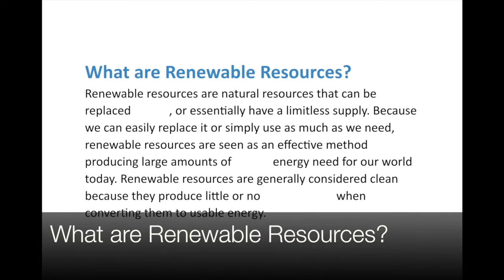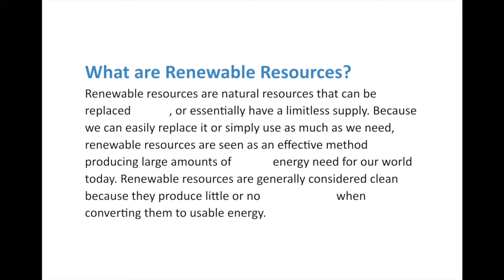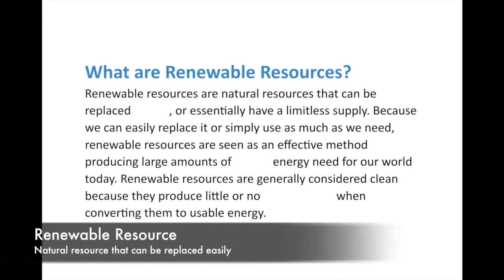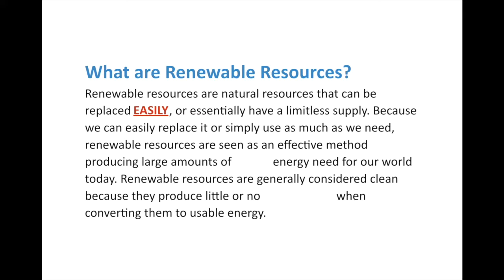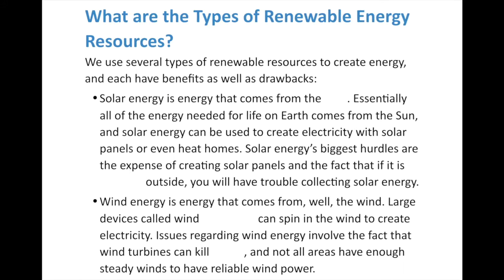We mainly divide natural resources into two categories. Renewable resources are natural resources that can be replaced easily or essentially have a limitless supply. Things like wind, running water, and the sun are what we call inexhaustible resources. Unless you're thinking about astronomical time scales of billions of years, we're never going to run out of that energy. Because we can easily replace them or simply use as much as we need, renewable resources are seen as an effective method of producing large amounts of clean energy. The reason why is because they produce little to no pollution. Let's look into the types of renewable energy resources.